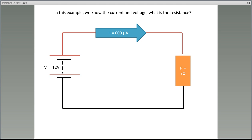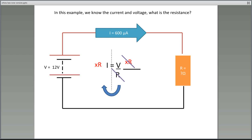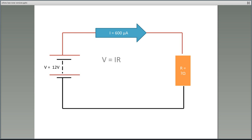What happens when we know the current and the voltage but not the resistance? We need to transpose the equation to make R the subject. I'll show this in a two-step process, though you may know a one-step method by swapping I and R. First move R by multiplying both sides by R — this gives V equals I times R. Then divide both sides by I: I divided by I gives 1, so R equals V divided by I.